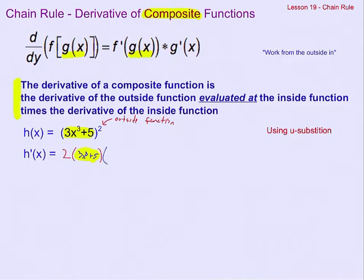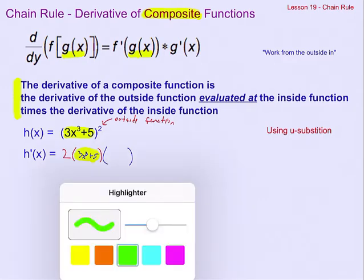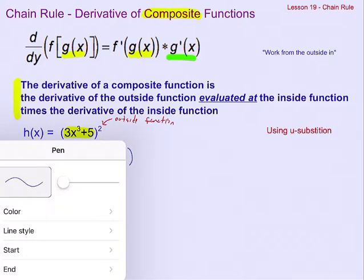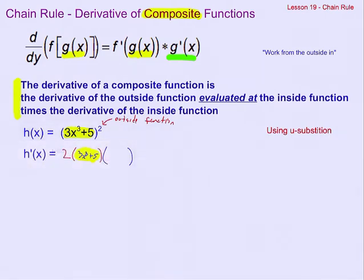And then it's times, this is where we get to the times, the derivative of the inside function, that is, I'm trying to do a little bit of color coding here, times the derivative of that g, the derivative of 3x cubed plus 5 is 9x squared. And so that is our final derivative, 2 times 3x cubed plus 5 times 9x squared.